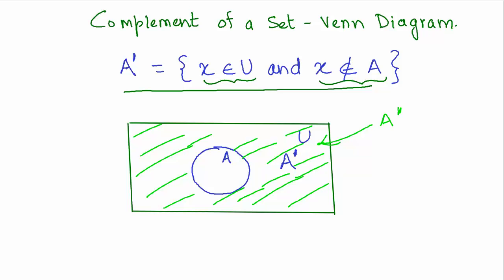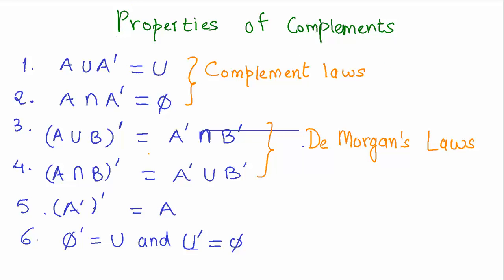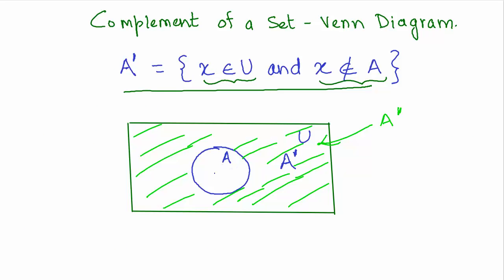This portion here represents A complement. Interestingly, if you combine A and A complement you get the universal set — that is one of the properties of complements. So A union A complement equals the universal set, and you can see that A and A complement together form the universal set.